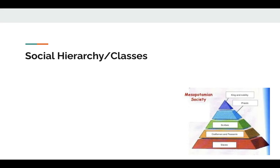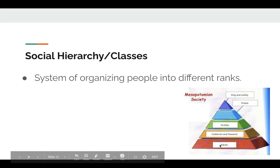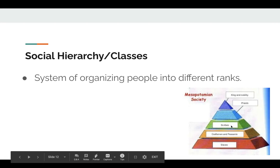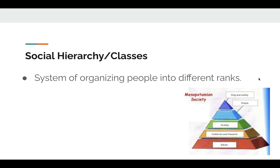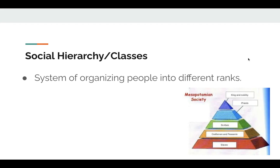Social classes, or a social hierarchy, means there's a system of organizing people into different ranks. One of the earliest societies, Mesopotamia, had their own social structure: the king and nobility at the very top, then priests, then scribes who record information, then craftsmen who produce goods, then peasants who farm the land, and then slaves. Do we have social classes in the United States? Unfortunately, we really do — the wealthy at the top, then upper middle class, middle class, lower middle class, and the poor at the bottom.